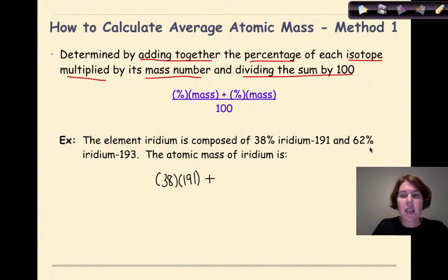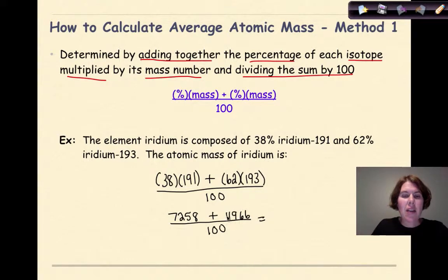And then I'm going to add that to the second percentage, which is 62, and multiply that by its associated mass number, which is 193. And then I'm going to divide the whole thing by 100. So I haven't done anything fancy to the numbers up here. I've just basically taken the percentage times the mass plus the percentage times the mass divided by 100. So if I do 38 times 191, I get 7,258. And I'm going to add that to 11,966. And I'm going to put it all over 100. So if I add these together, and I divide by 100, I'm going to get 192.24u.